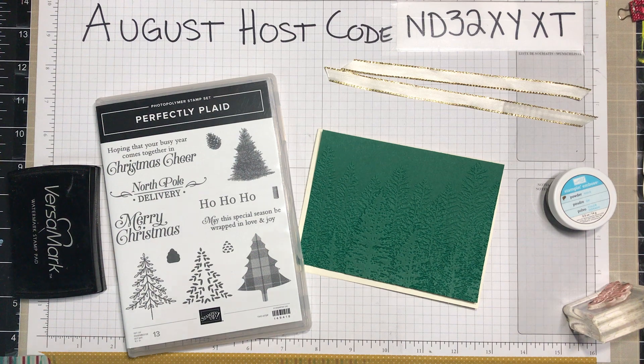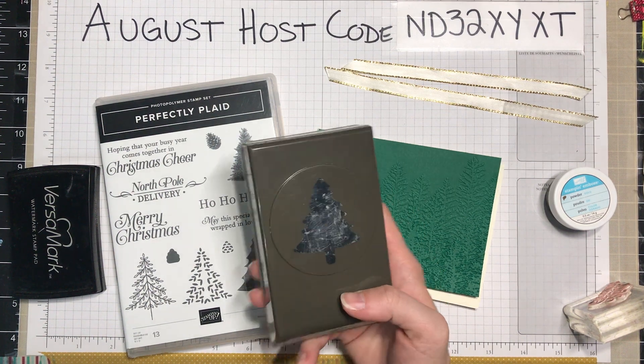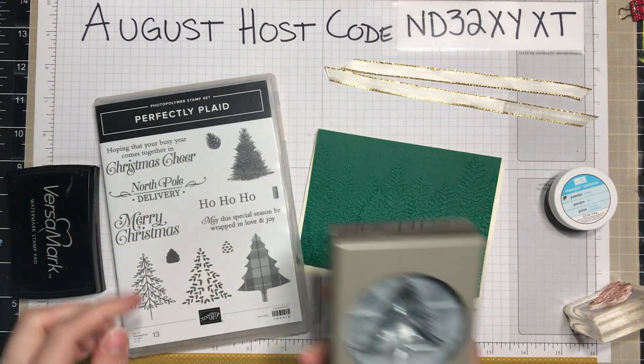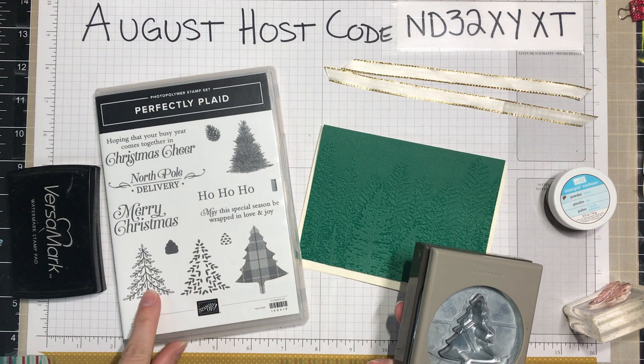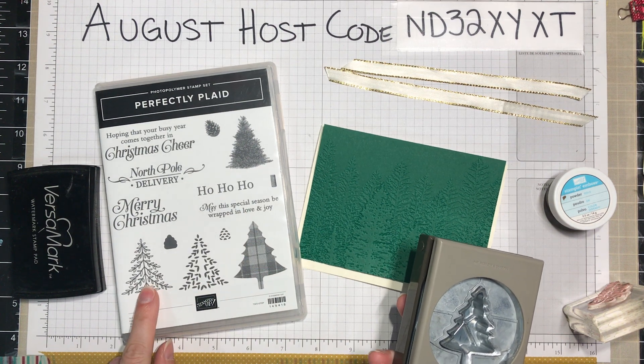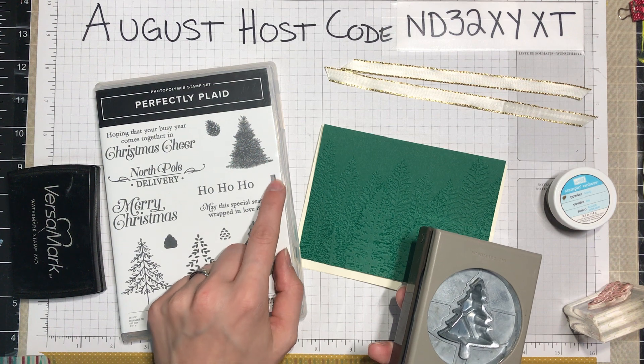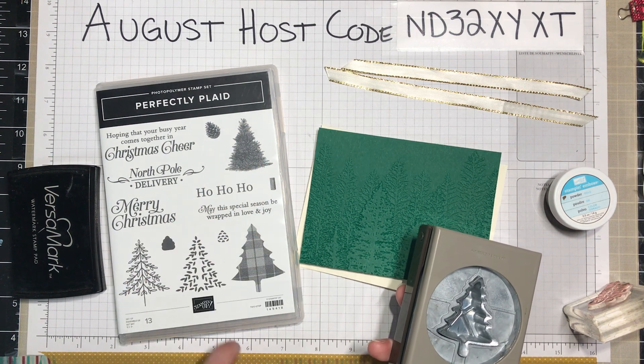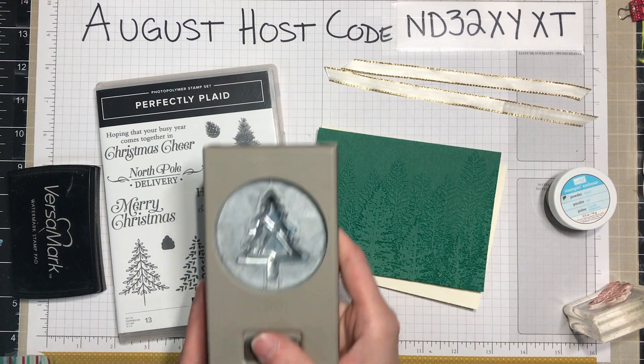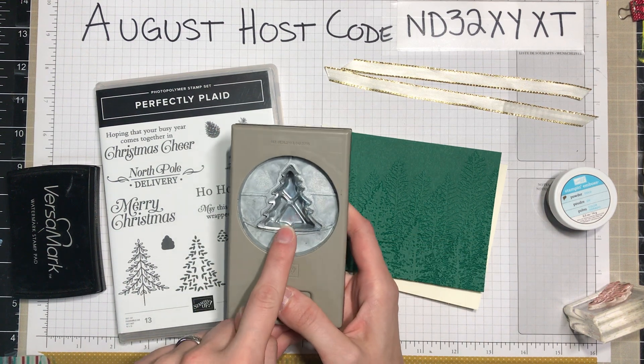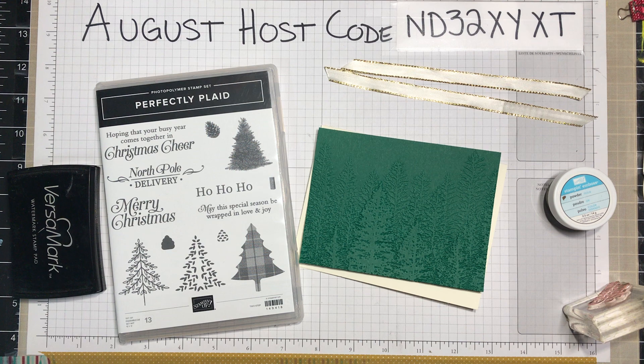Here it is. So it has this lovely tree punch here, which is great because it actually punches out all four of these different trees. And then this here is kind of a photopolymer textured stump. I love it and I'll definitely use this set again this holiday season.